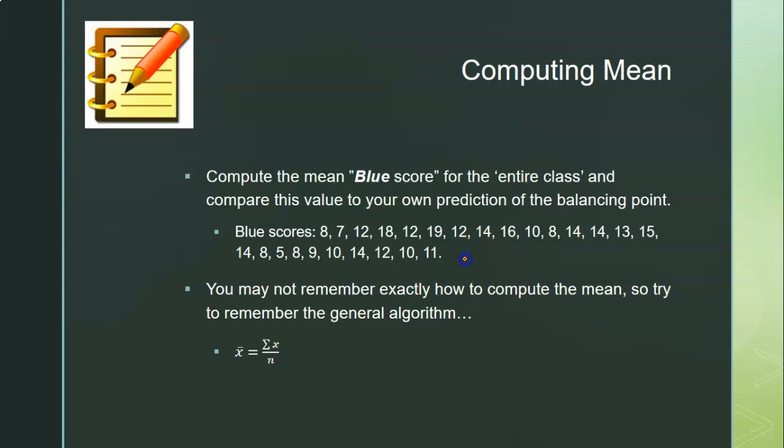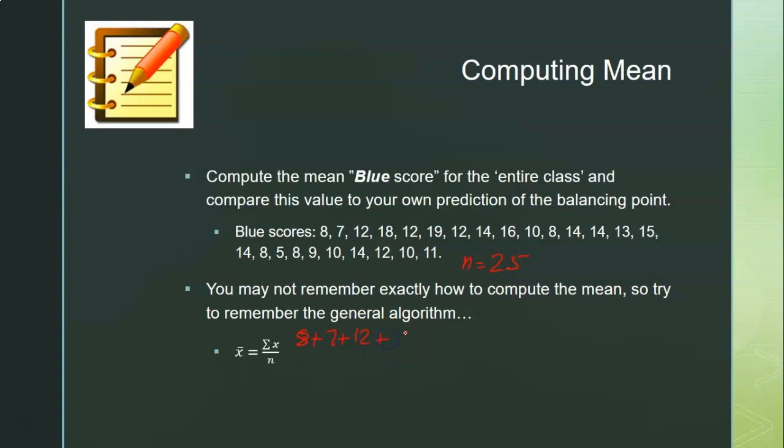The way to calculate the mean is to add all of these values together and then divide by 25.